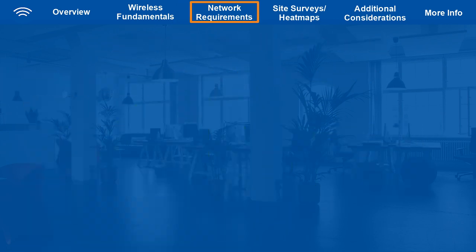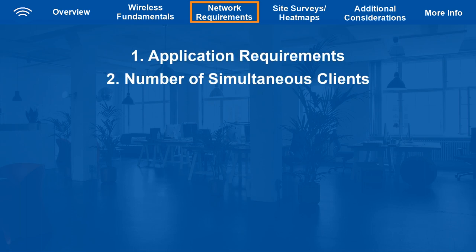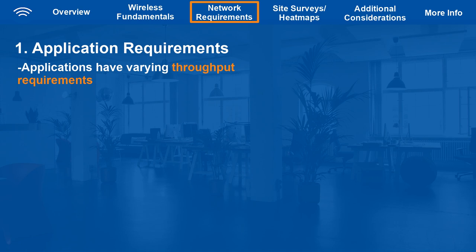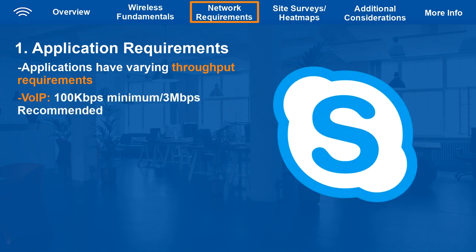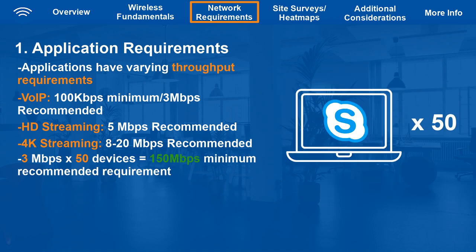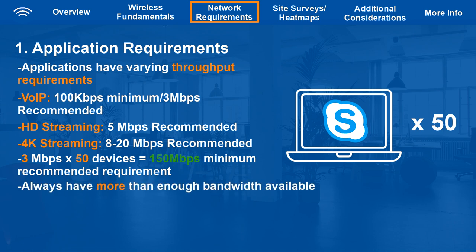Next, let's talk about the needs of your network. You need to identify the following: applications in use, number of simultaneous clients, types of clients, areas to be covered, and power availability. Different applications have different throughput requirements — for example, Voice over IP has a minimum of 100 kilobits per second but 3 megabits per second is recommended; 1080p video streaming requires 5 megabits per second; and 4K streaming requires 8 to 20 megabits per second. These don't sound like a lot individually, but 50 users on Skype calls simultaneously requires at least 150 megabits per second. Always make sure your network can handle more than required, because more bandwidth results in far fewer frustrated users.